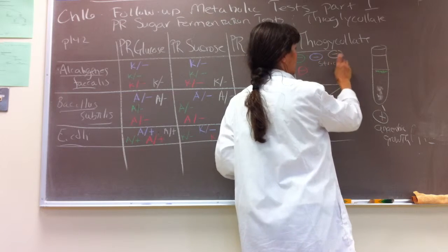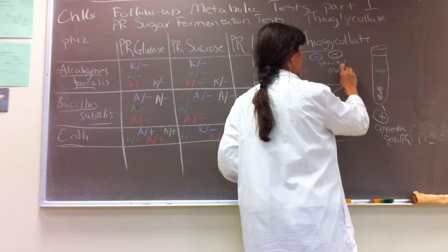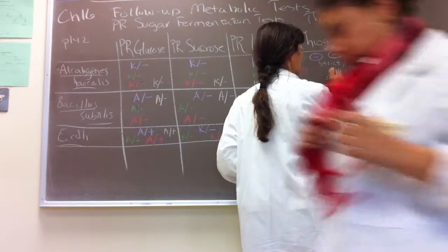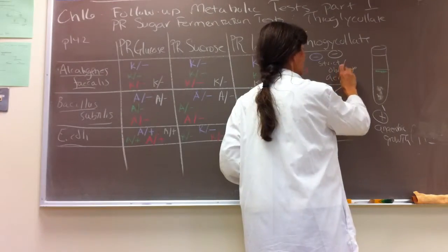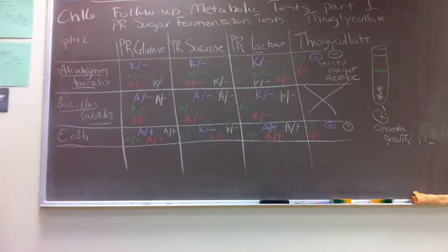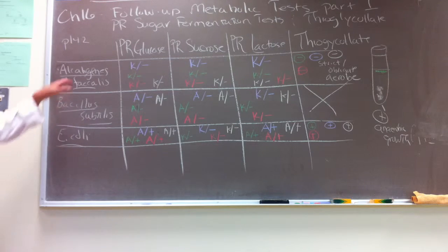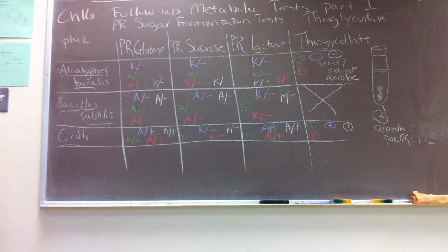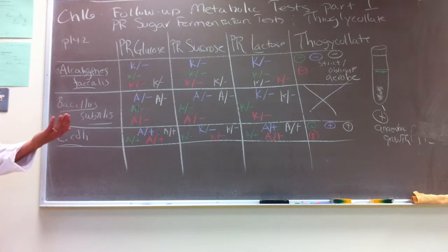Just like we would be if we got inoculated into the media, we can't carry out fermentation. The pattern of growth in your thioglycolate supports that hypothesis. It turns out Alkalogenes fecalis apparently can't use sugars at all, which is just so bizarre because sugars are usually the most common source of carbon and energy.